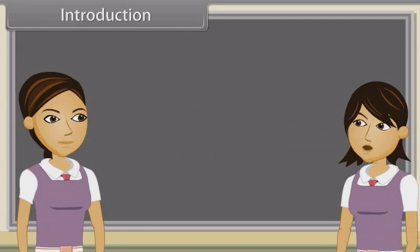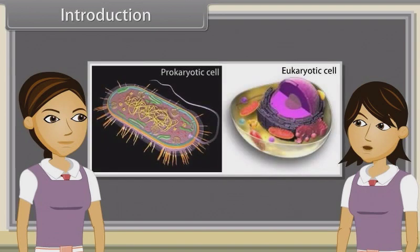We have discussed cell theory, structure and functional regions of cell, types of plant and animal cells, structure of plant and animal cells, prokaryotic cells and difference between plant and animal cells already.